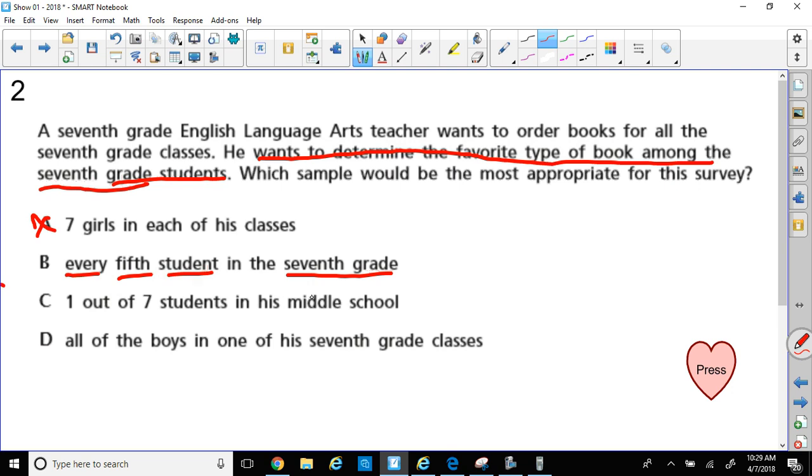1 out of 7 students in his middle school. Well, 1 out of 7 students, that's good, that's random, but in the middle school I have a problem with that because in the middle school you may have 8th graders and 6th graders and maybe even 5th graders who are looking to respond to that ELA question and he's trying to pick for the 7th grade. So this is the problem that I have here because it's too many other grades that are not responding to the question for the 7th grade. So we don't want to hear from 8th graders, unfortunately, or the 6th graders or 5th. Alright, so I'm going to cross out C. All of the boys in, all of the boys, what about the girls? In one of his 7th grade classes.